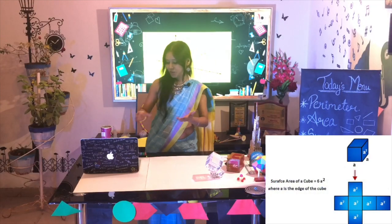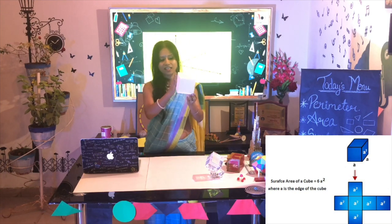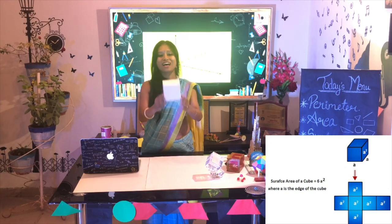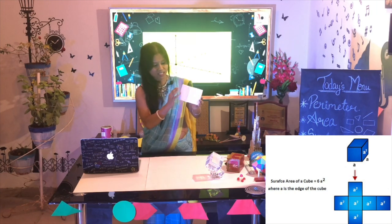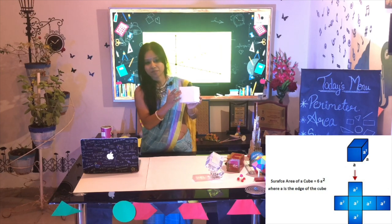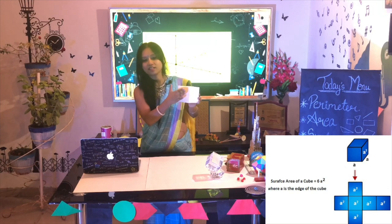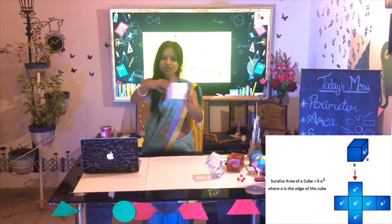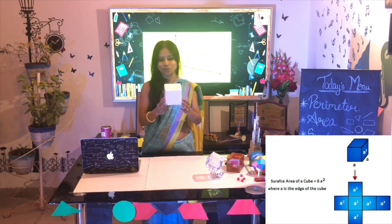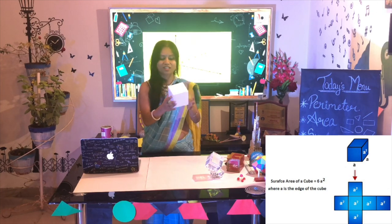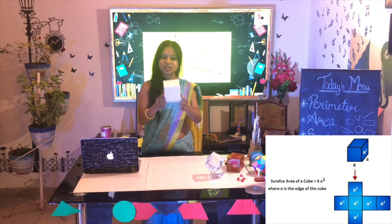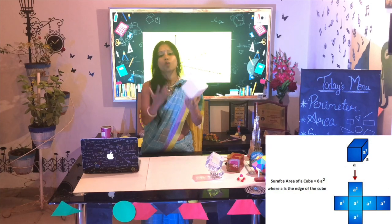What do you mean by surface area? When we talk about a cube, we can see that the cube has 4 faces laterally and 2 faces on the top and bottom. In all, a cube has 6 faces. Each face itself is a square shape. Once we find the area of one face, we can similarly find the area of all the faces, and that gives us the total surface area of the cube. Why is it important? Because if you want to cover a gift box or paint a cube-shaped box, it is very useful to understand what the surface area is.